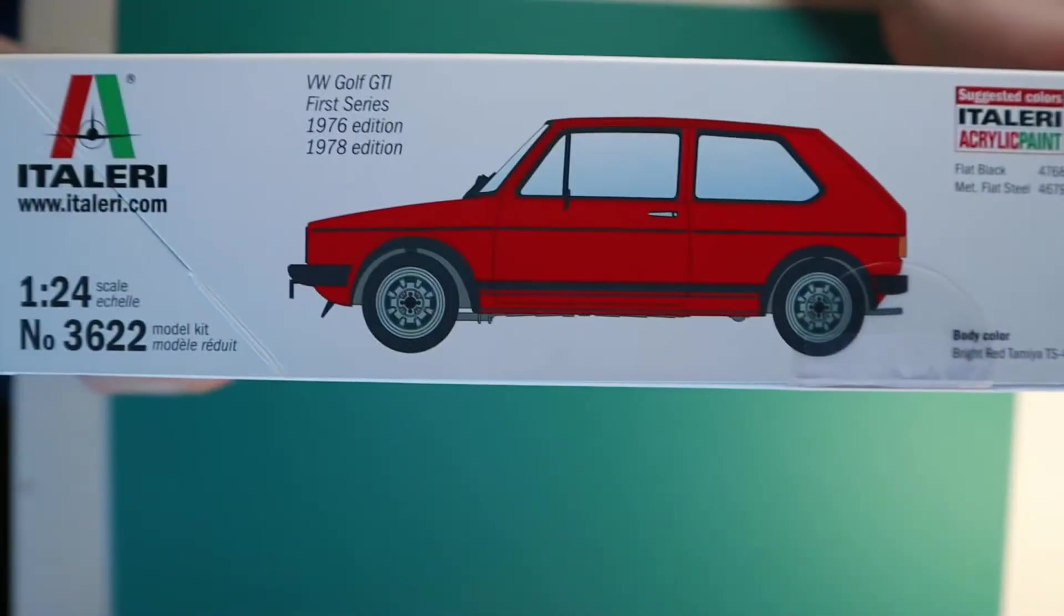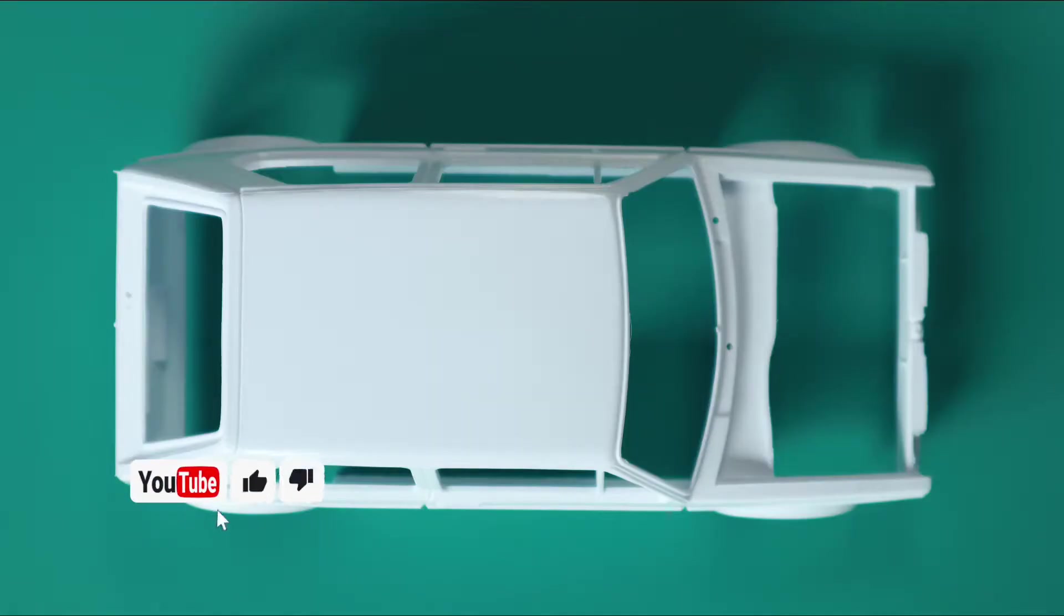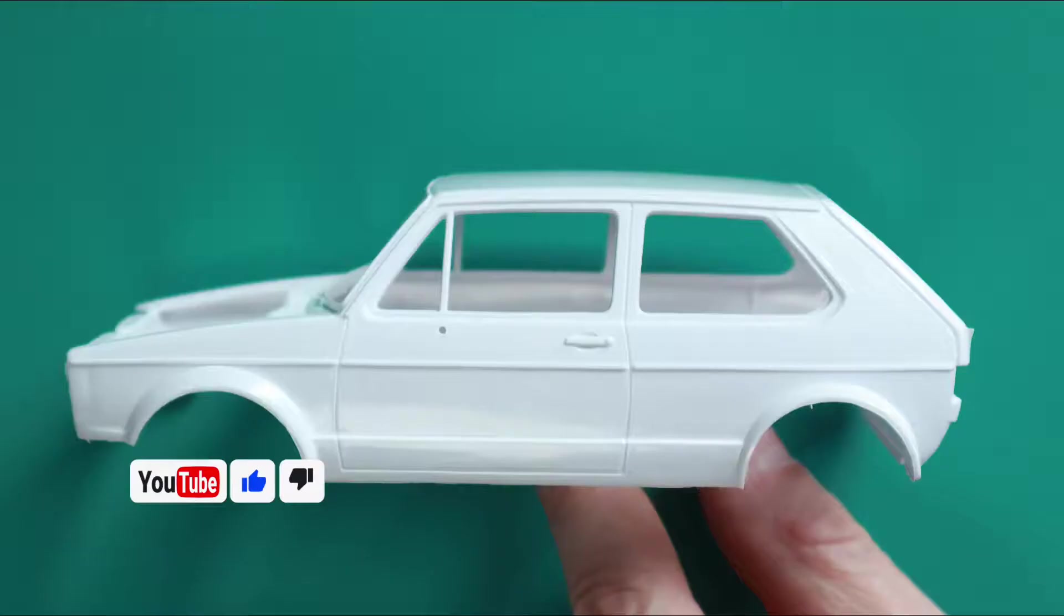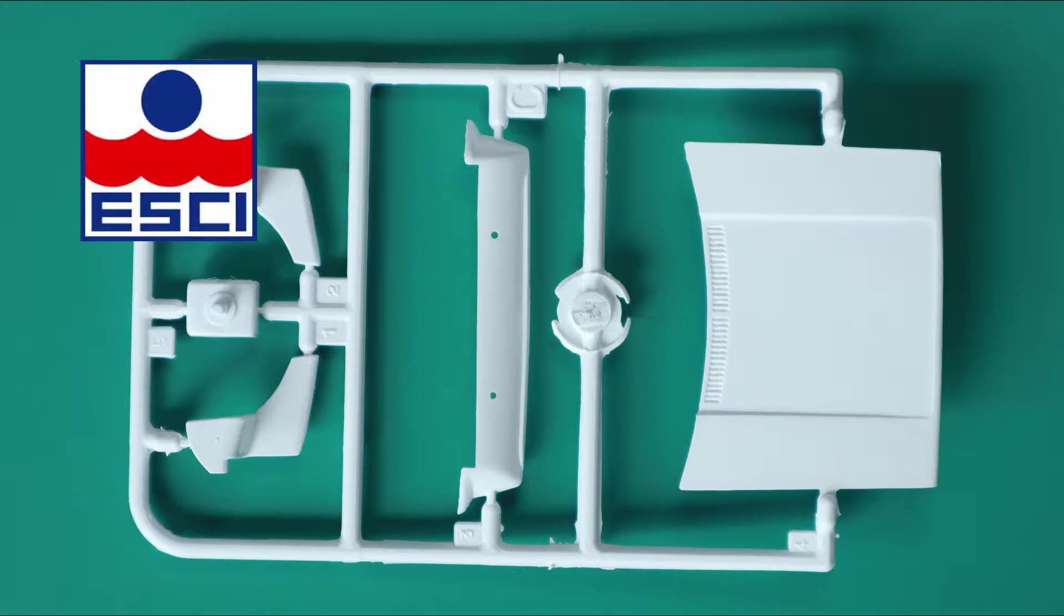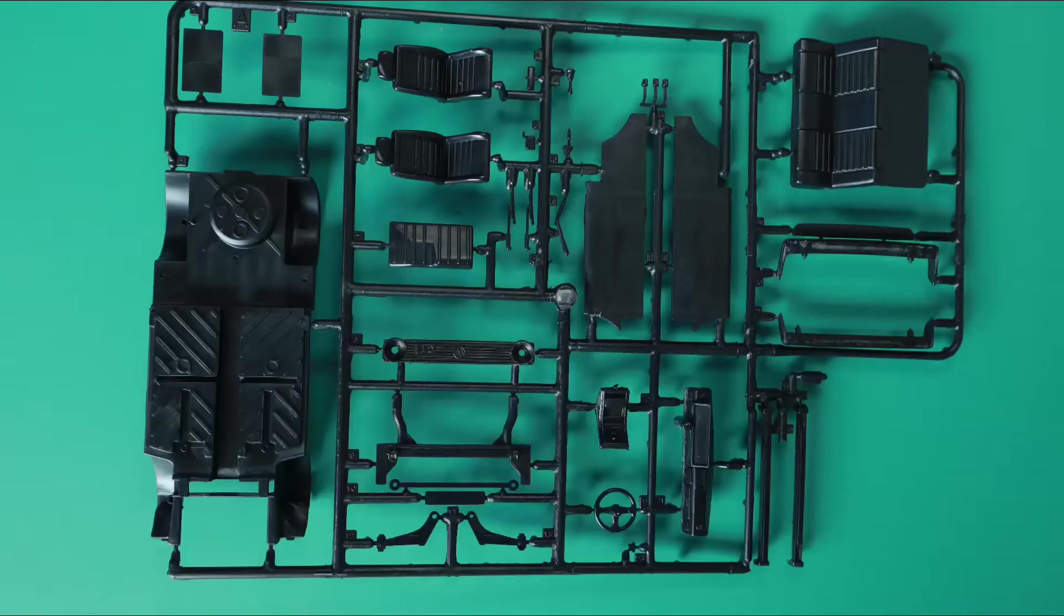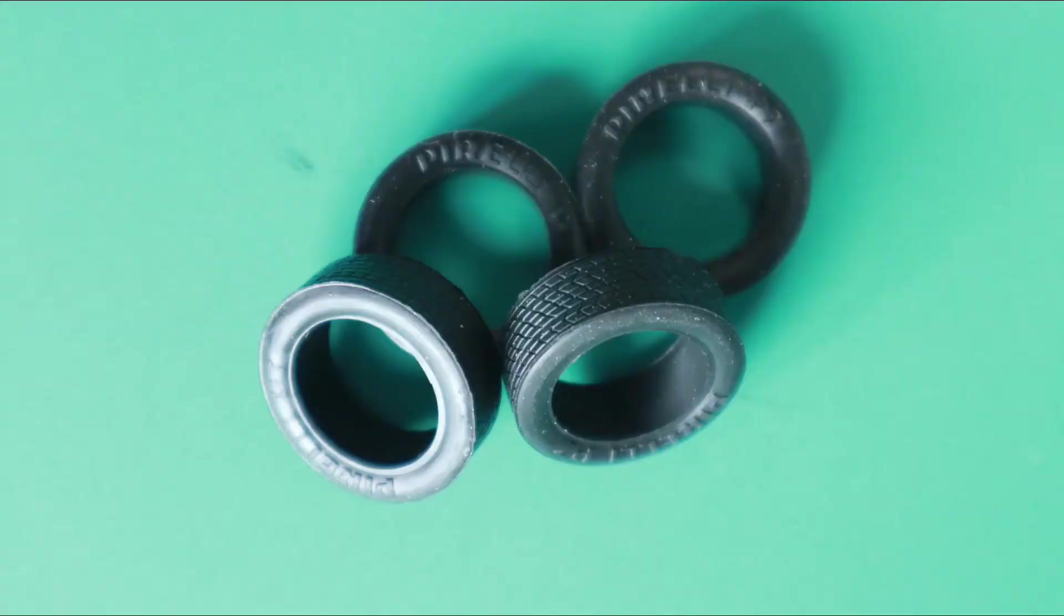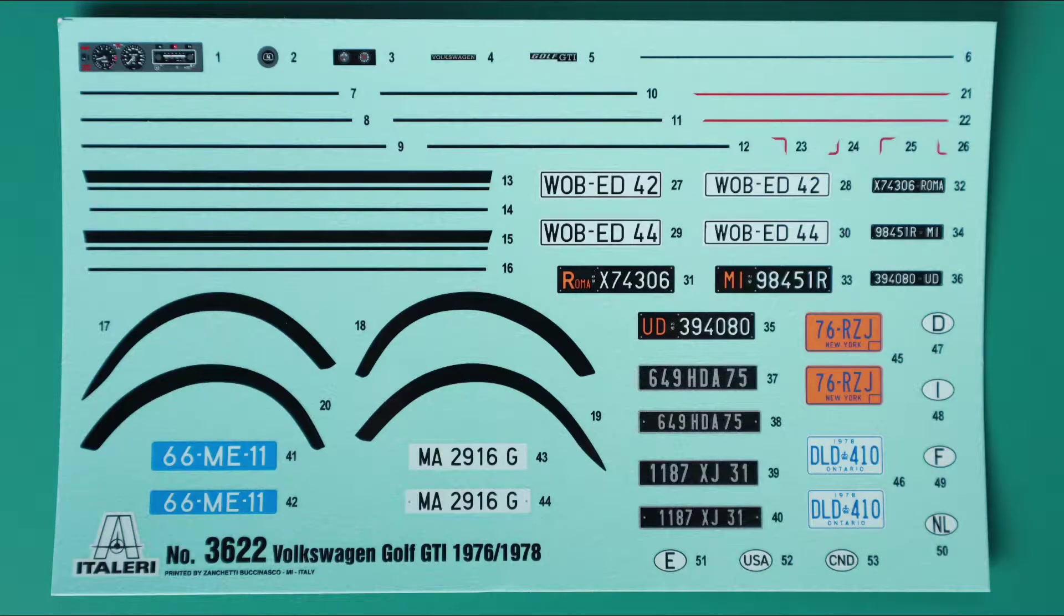This is a 1:24 scale model and it's not exactly Italieri's brainchild. In fact, if you look at Scalemates, you will see that this is a new box, a rebox version of their ESC version of the model which has been released in 1970-ish and has been reboxed and redistributed several times throughout the years. This is just the latest version of this very old model.